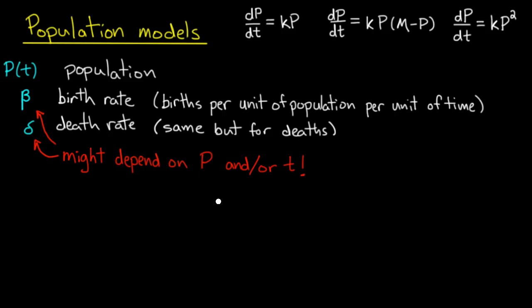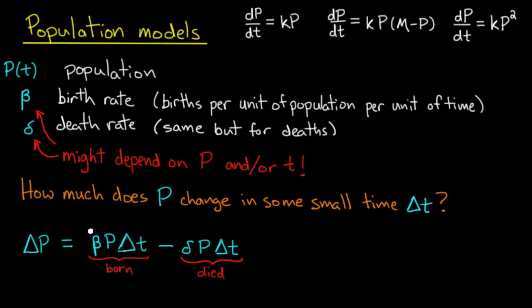Now to set up a model for the population, we ask ourselves the same question we usually do when we're trying to derive a differential equation. And that is, how does the dependent variable change when the independent variable changes? So the question would be, how much does P change in some small interval of time, Δt? We'll call that change ΔP.